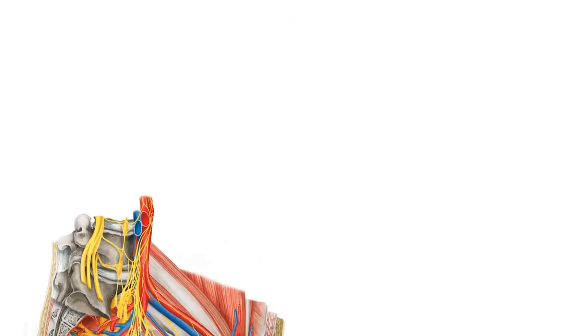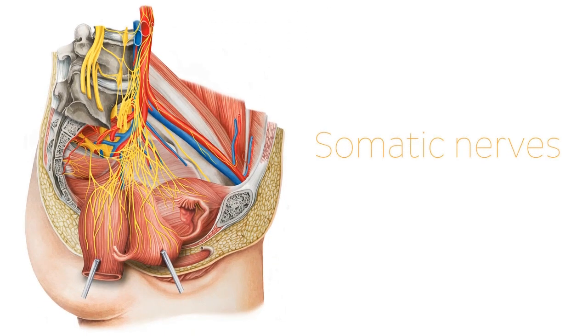Hello everyone, this is Juan from KenHub and welcome to another anatomy tutorial where this time we're going to be talking about the nerves of the female pelvis. The innervation of the female pelvis involves both somatic nerves for motor and sensory functions and also visceral nerves or autonomic for innervation of the viscera or the organs. Throughout this tutorial, I'm going to be talking about the somatic nerves and visceral nerves that will be innervating the female pelvis.